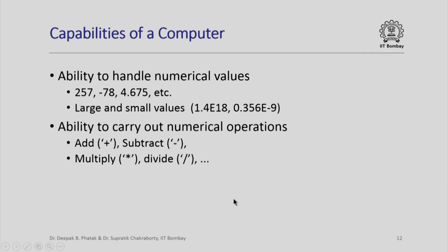This is what we need to remember when we deal with a computer. Let us now look at the capabilities of a computer. A computer has the ability to handle numerical values — for example, 257, minus 78, or 4.675. It can also handle very large and very small values. For instance, 1.4E18 means 1.4 multiplied by 10 to the power 18, and 0.356E-9 means 0.356 multiplied by 10 to the power minus 9. A computer is capable of dealing with such very large and very small values, subject to limited precision as we shall see later.